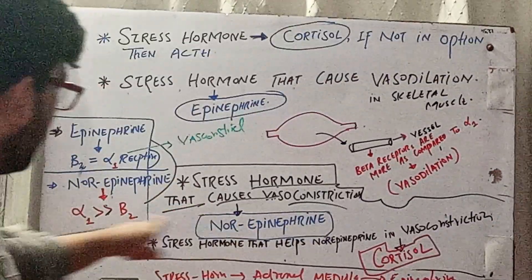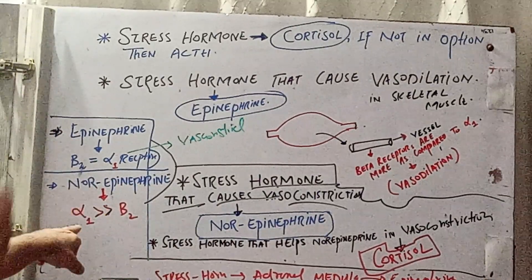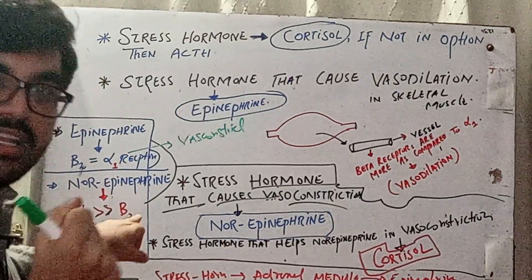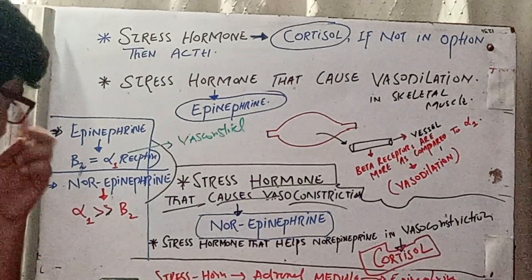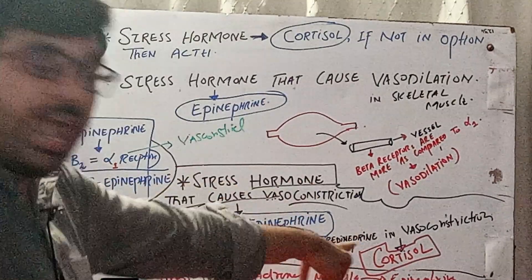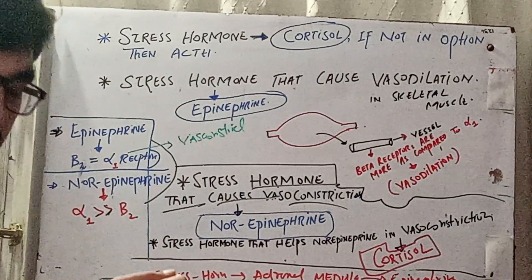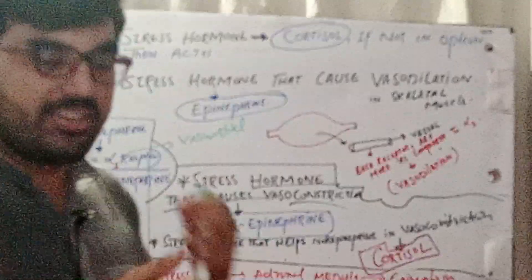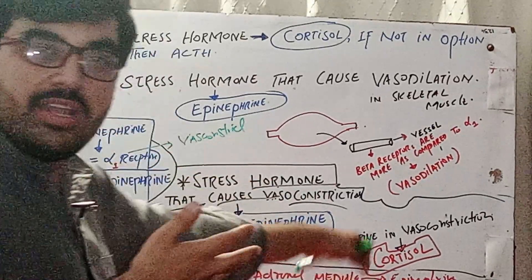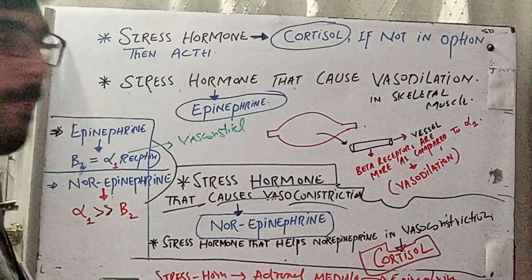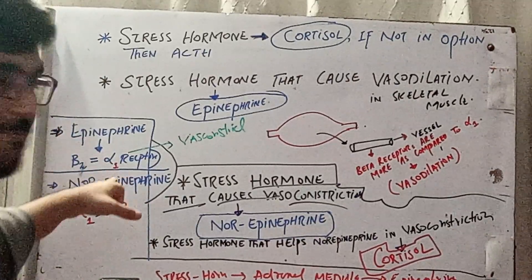Norepinephrine has strong activity at alpha receptors and less activity at beta receptors, so it is a chief vasoconstrictor — it constricts vessels throughout the whole body, whether skeletal muscle or outside skeletal muscle. Cortisol helps norepinephrine in vasoconstriction in two ways: first, it increases the sensitivity of receptors to norepinephrine and doubles its action; second, it increases the number of alpha receptors, which causes further vasoconstriction.